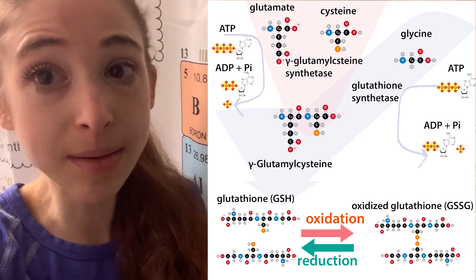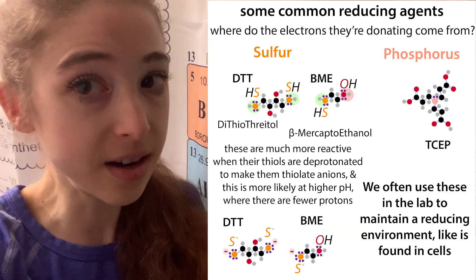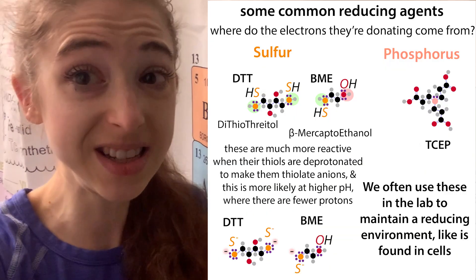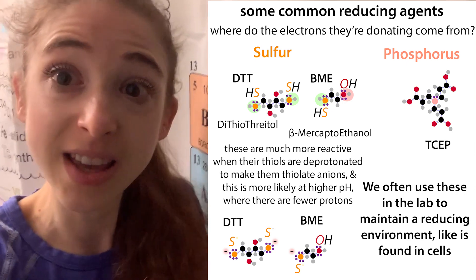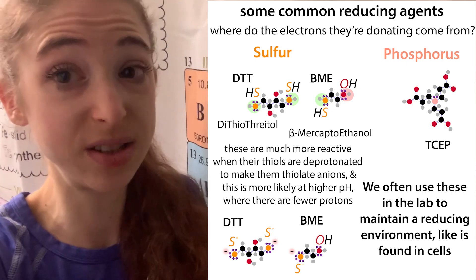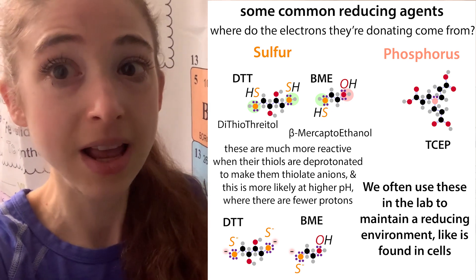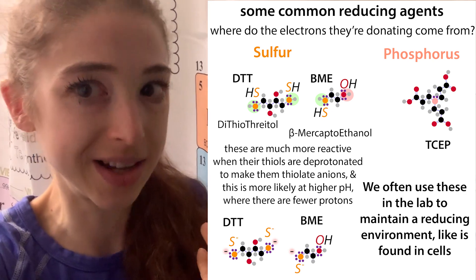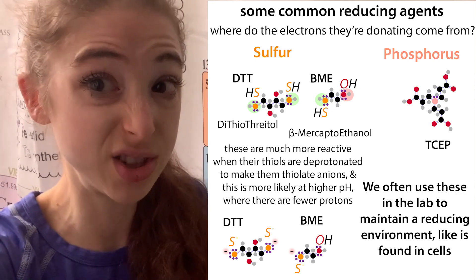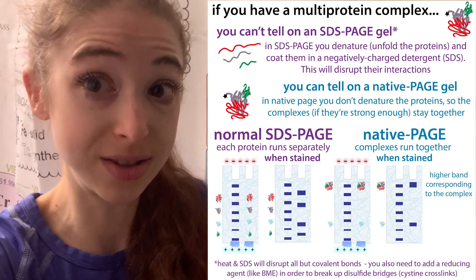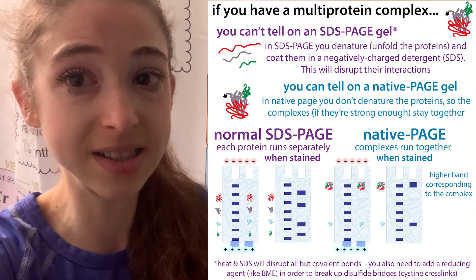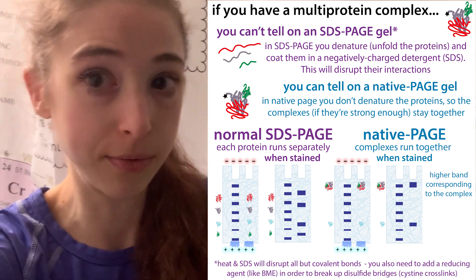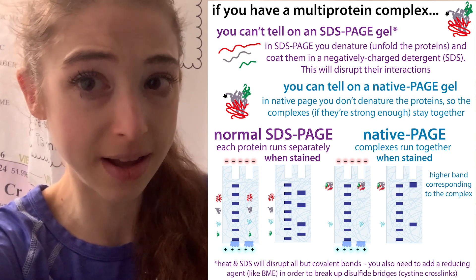In the lab, we don't typically use glutathione. Instead, we use reducing agents like DTT and beta-mercaptoethanol. Cysteine is the reason why you have to add those to your buffers, especially when you're running a denaturing SDS-PAGE, to make it so that you remove those crosslinks and are able to actually unfold the proteins before you separate them.